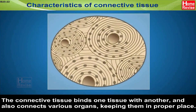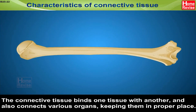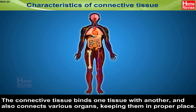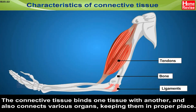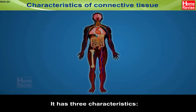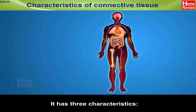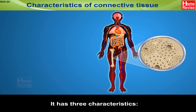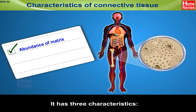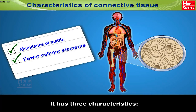The connective tissue binds one tissue with another and also connects various organs, keeping them in proper place. It has three characteristics: first, abundance of intercellular substance or matrix; second, fewer cellular elements; and third, fibres.